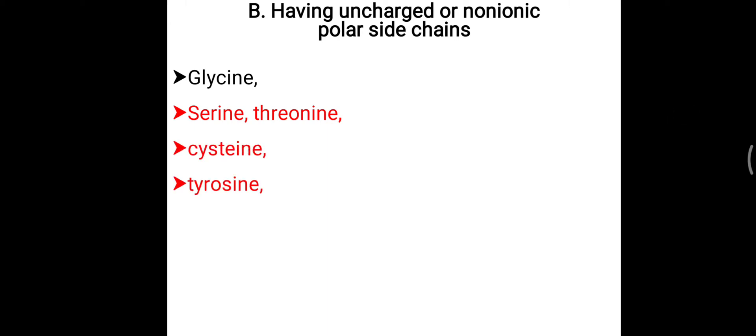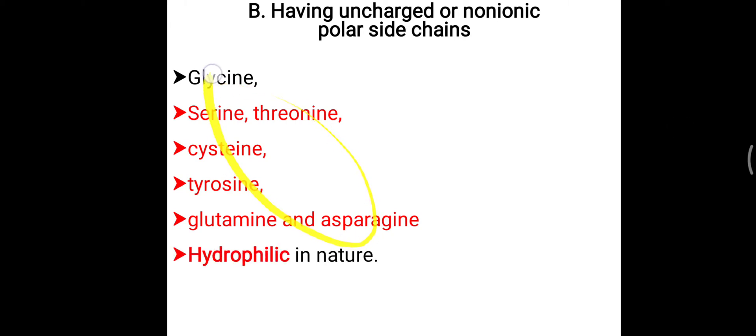The second category based on side chain is uncharged — meaning there is no particular positive or negative charge. It is also called non-ionic but with a polar group. A simple hydroxyl group is called a polar group. Glycine is a simple amino acid containing hydrogen, which is also polar. Serine and threonine are hydroxyl group-containing amino acids. Cysteine has an SH group, tyrosine contains a phenol group, and glutamine and asparagine are amide group-containing amino acids. These all are uncharged — they do not have ionic charge but are solubilized in water, so they are called uncharged non-ionic polar side chain, and all are hydrophilic, meaning water-soluble amino acids.